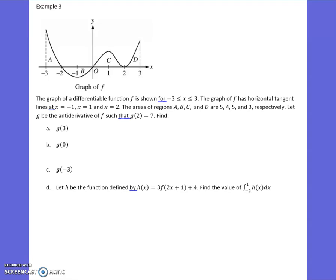All right, in our third example, we have a graph, and we also have some information about that graph. So we know that it's from negative 3 to 3. We know that there are horizontal tangents at x equals negative 1, at 1 and at 2. The areas of the regions A, B, C, and D are 5, 4, 5, and 3, respectively. So A is 5, I'm going to fill that in. B is 4. I'm going to write a negative 4, because I don't want to forget that that should be a negative area. C is 5, and D is 3. Okay.